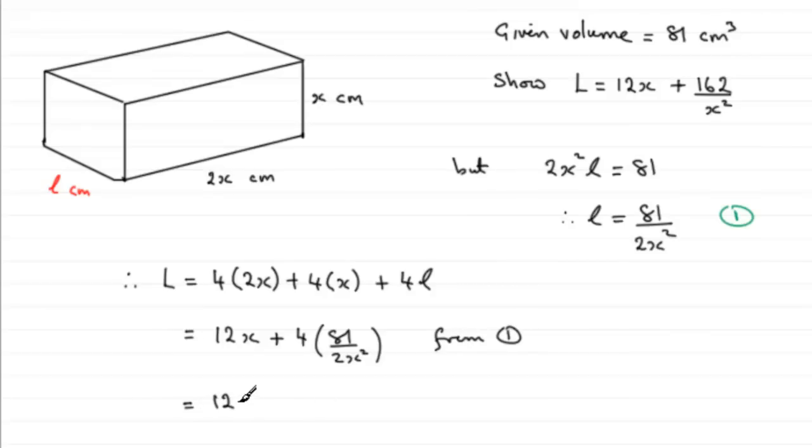Now if we tidy this up, we're going to have 12x, then the two cancels into the four twice, so you've got two lots of 81 which is 162 over x squared. And that's what we had to show.